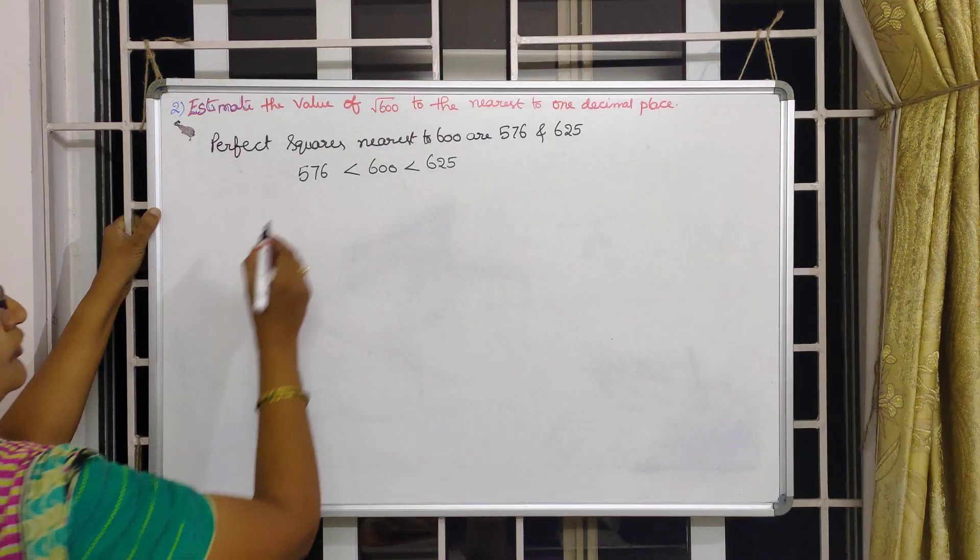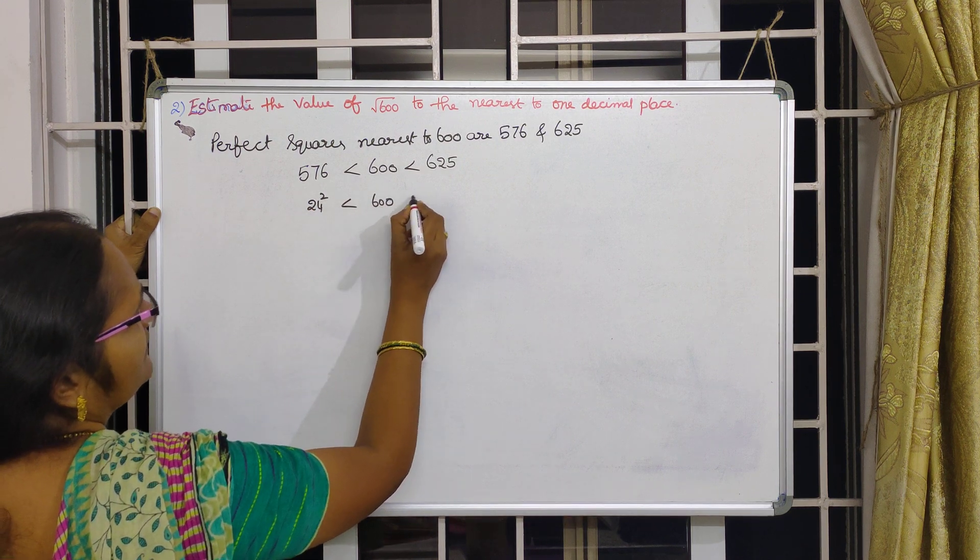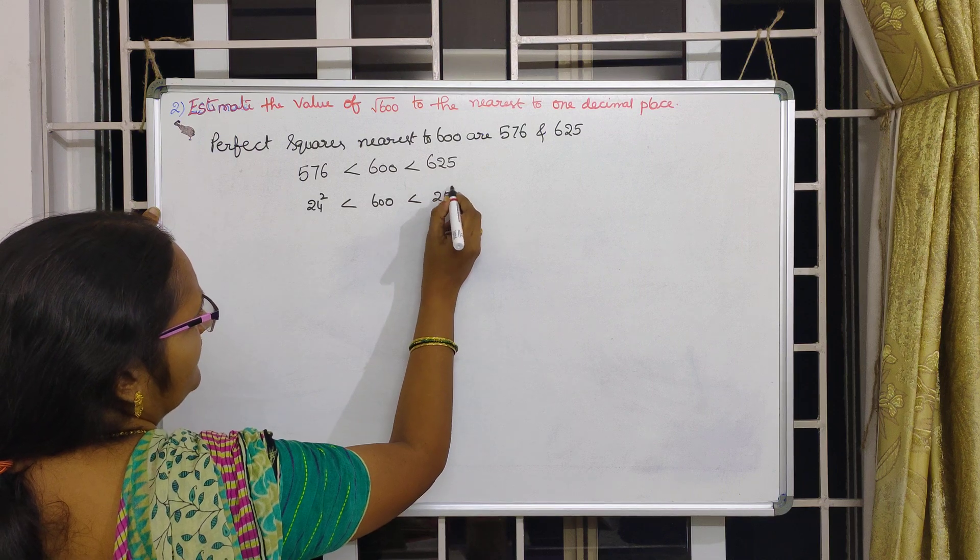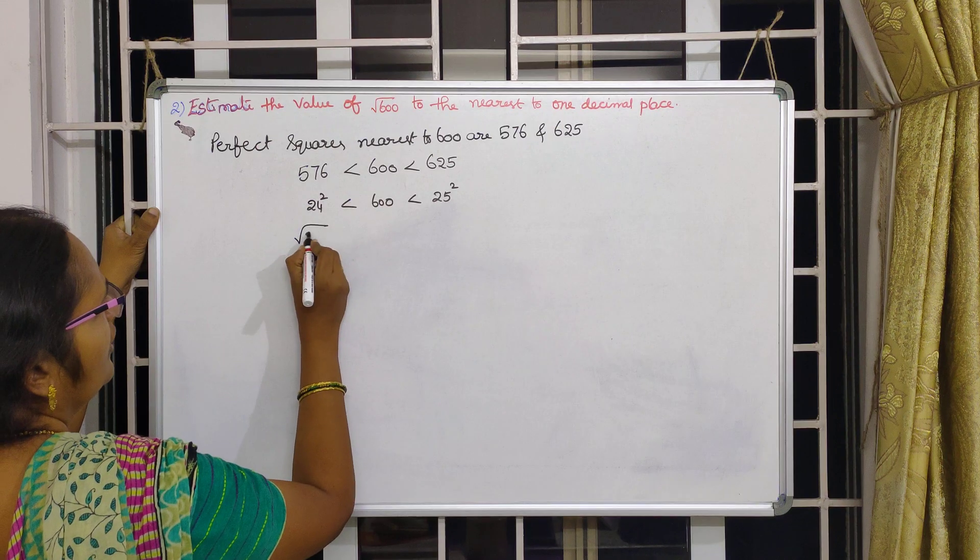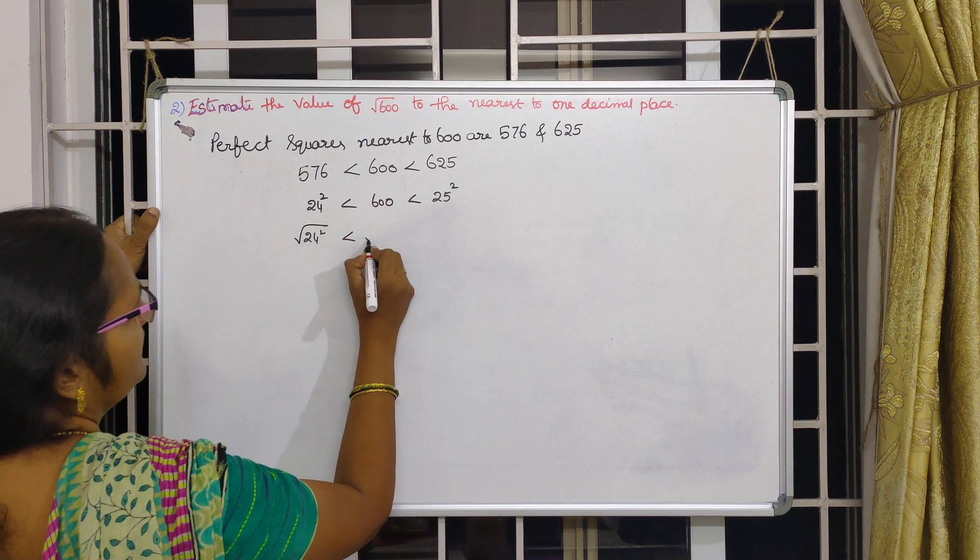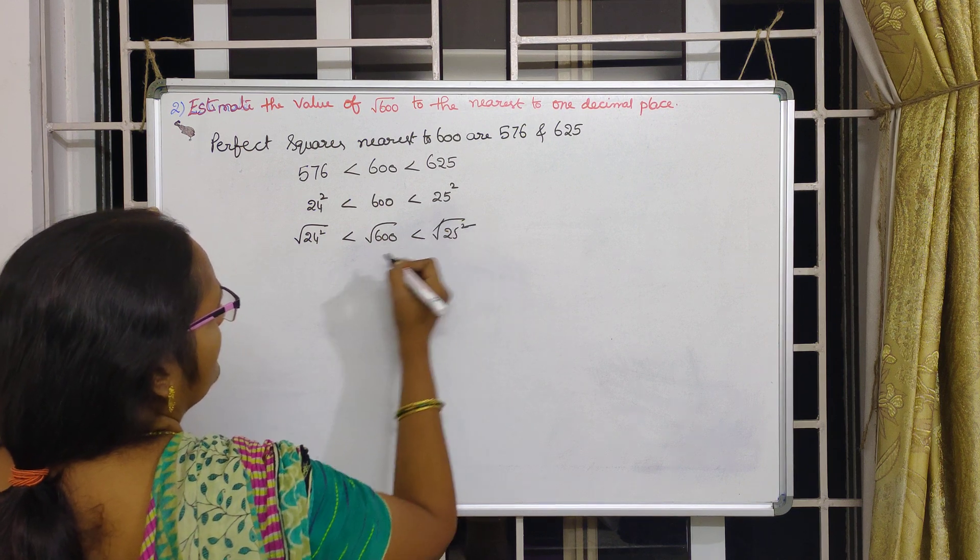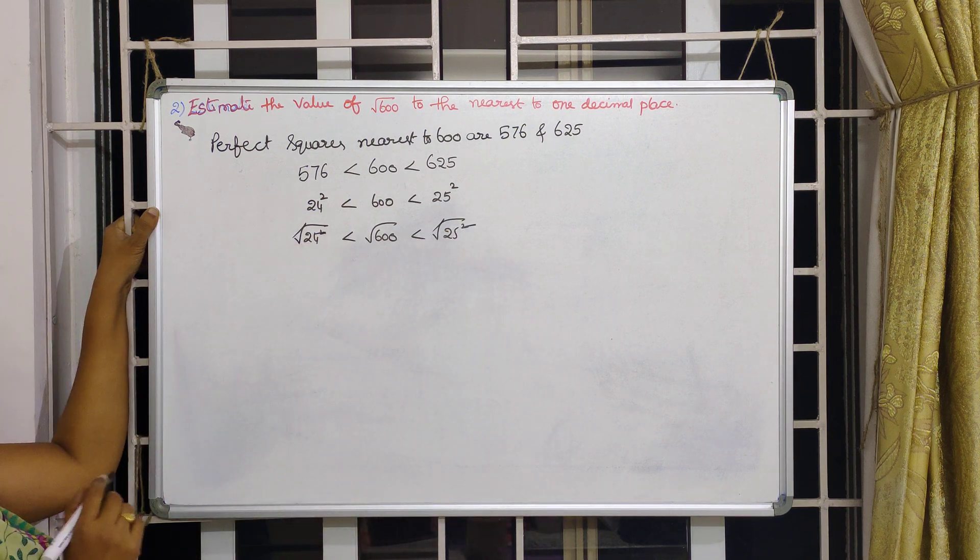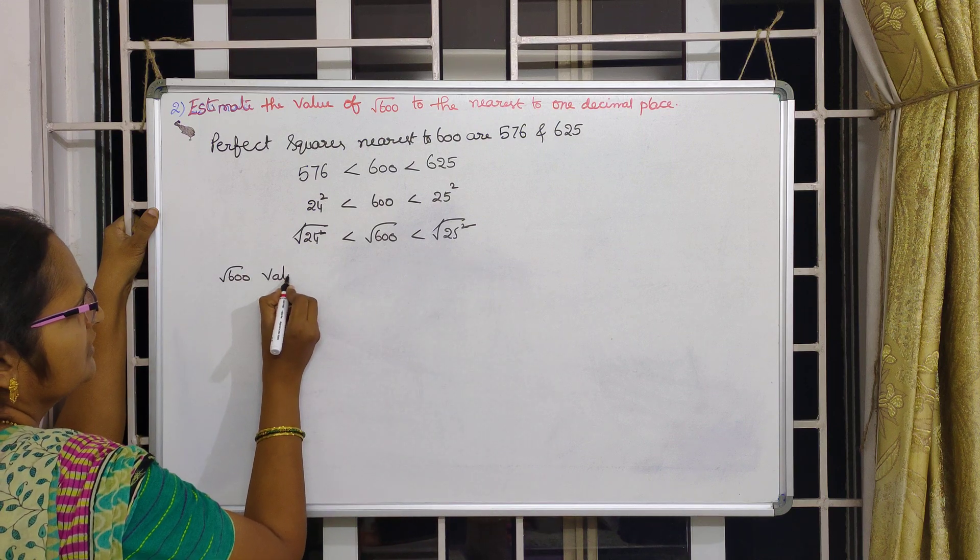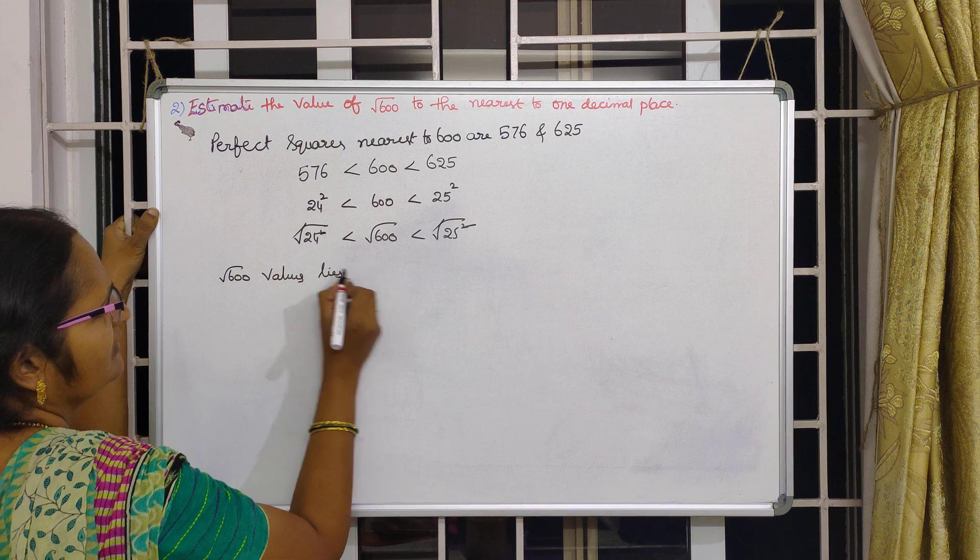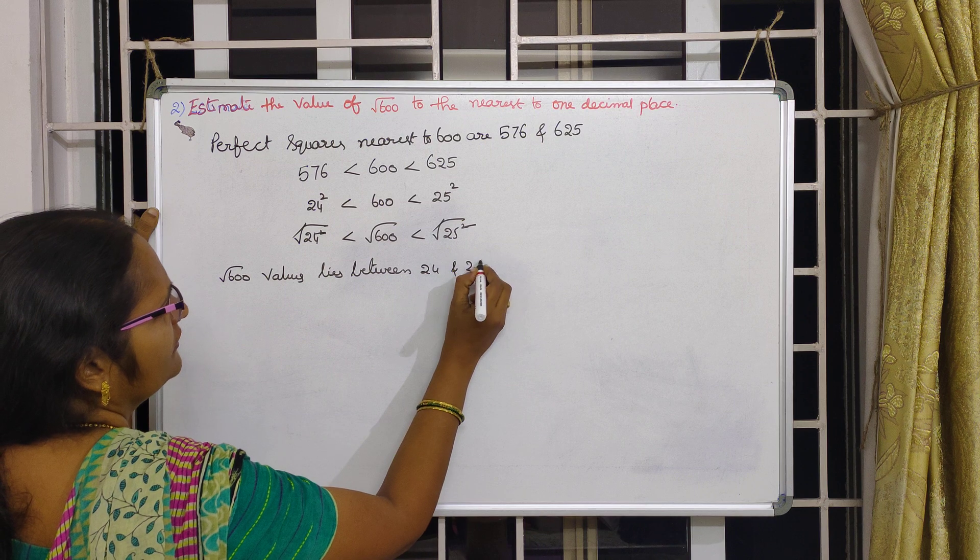Otherwise how do we write this one? 24 square is less than 600 is less than 25 square. Now both I am applying the square root. Square root of 24 square is less than square root 600 is less than square root of 25 square. Square and root gets cancelled. What does it mean?